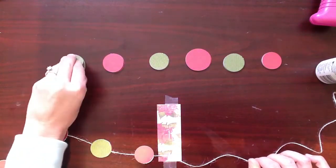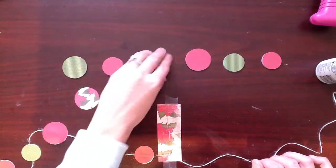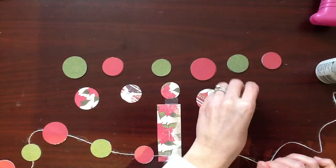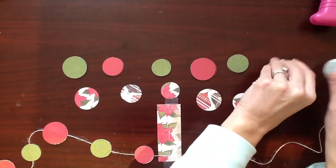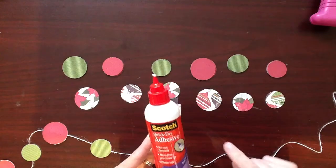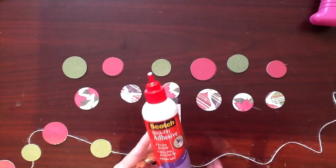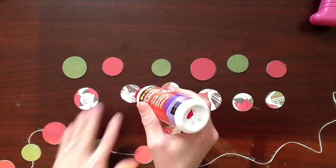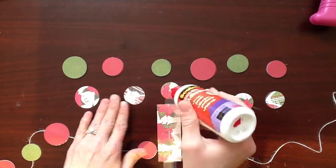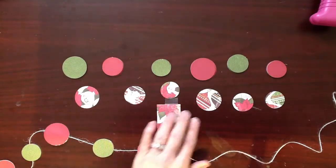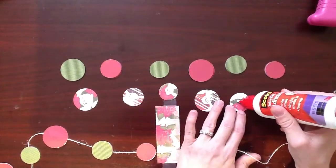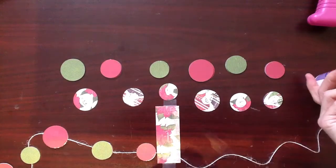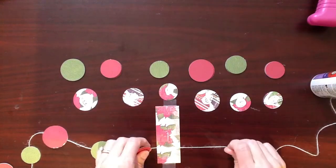So what I'm going to do is I'm going to turn each circle over and apply some glue. And the adhesive that I'm using is the Scotch Quick Dry Adhesive. And I'm going to put a fair amount of glue on each circle. Because it has to hold the other circle, and it has to go through the twine.